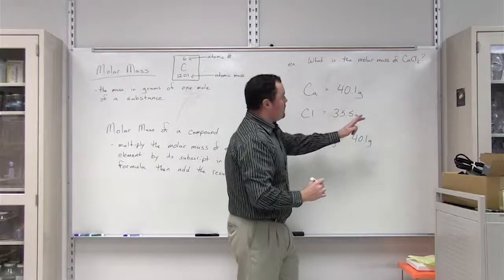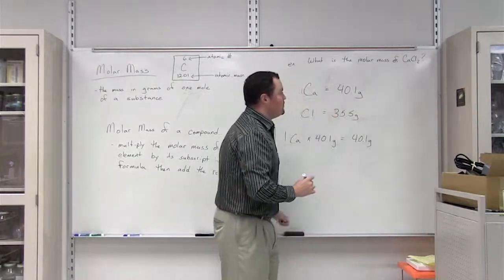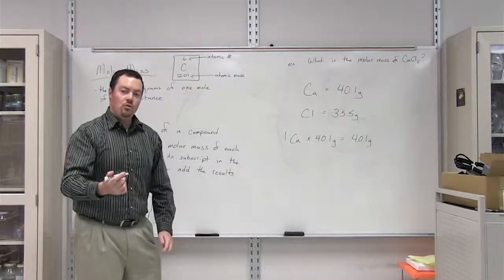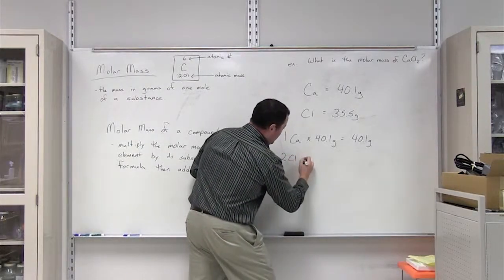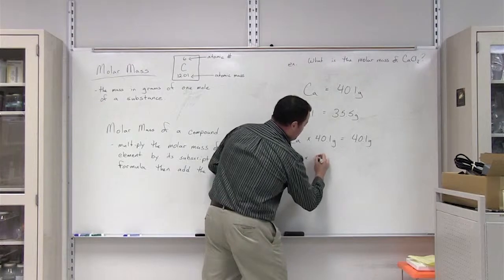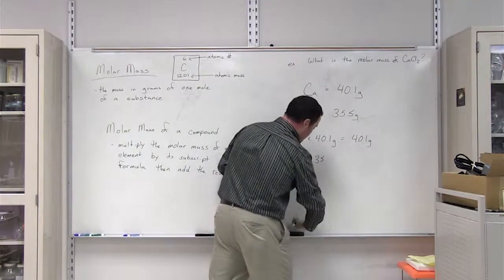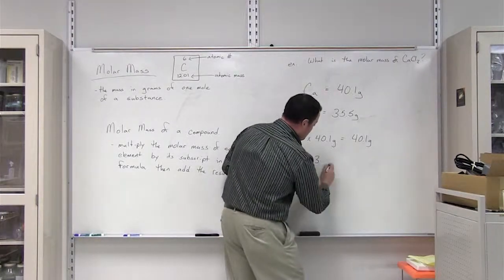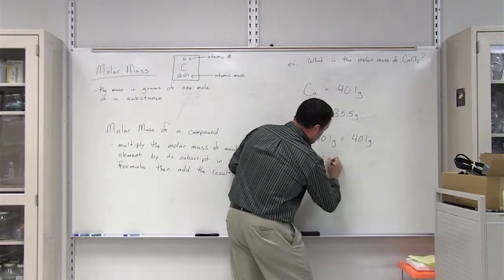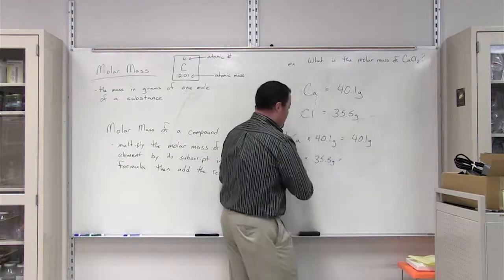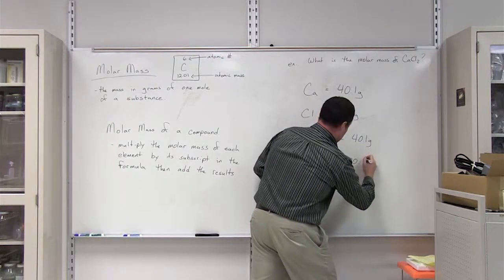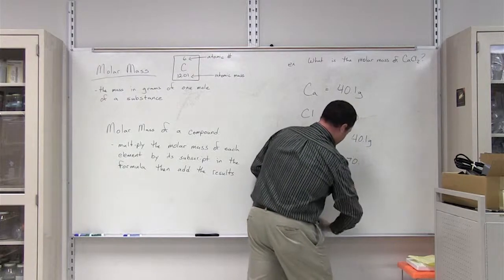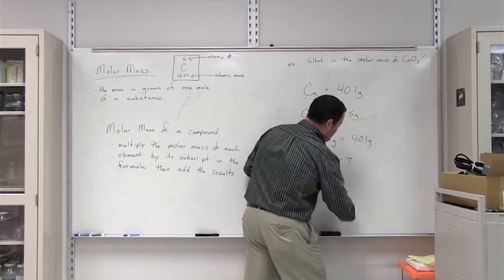Now what about chlorine? You look here, chlorine has a subscript of two, which indicates there's two chlorines for every one calcium. So we're going to multiply two chlorines by the molar mass of chlorine, which is 35.5, and that equals 71.0 grams.